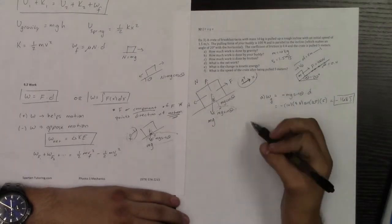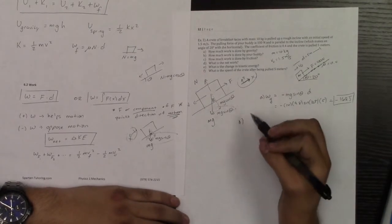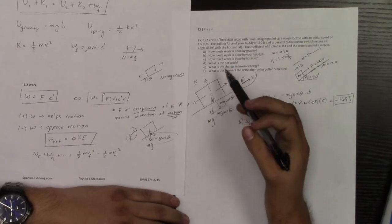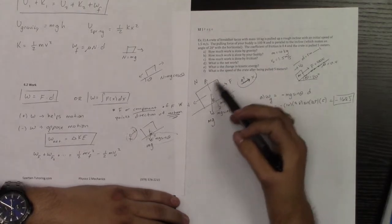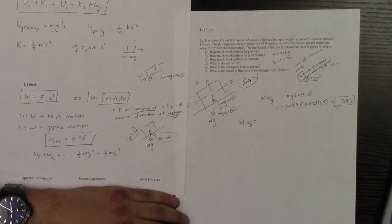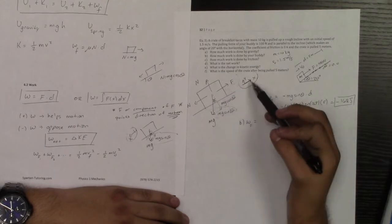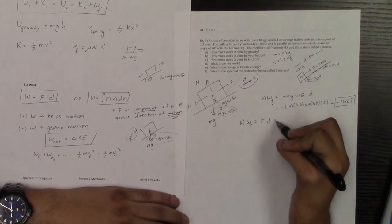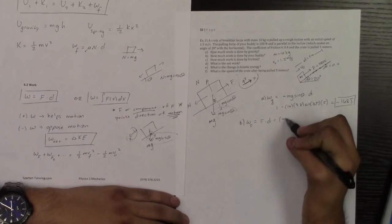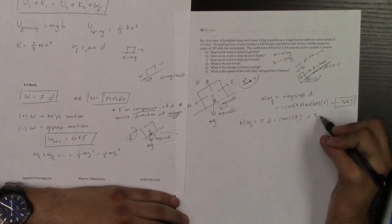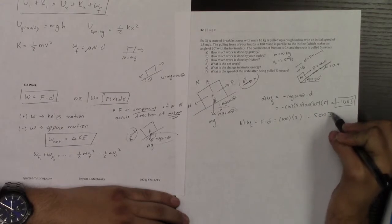Let's take a look at part B. Part B said, what is the work done by our buddy? What is the work done by this force F? Notice how this F is going to be helping that motion. It's pointed in the positive direction of that motion, and it's already in the same direction. So this is literally just going to be that F times d, which they said this is 100 newtons times the d of 5 meters. And so that would be 500 joules.